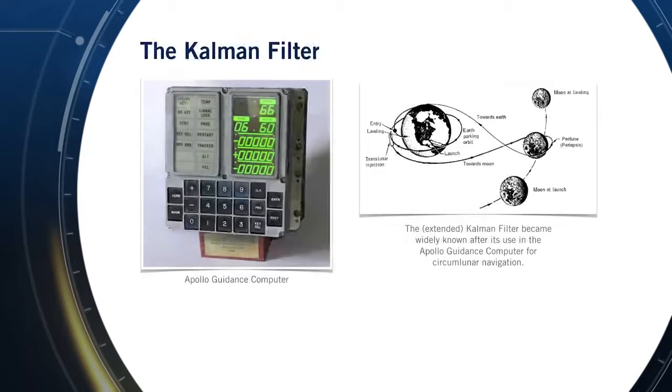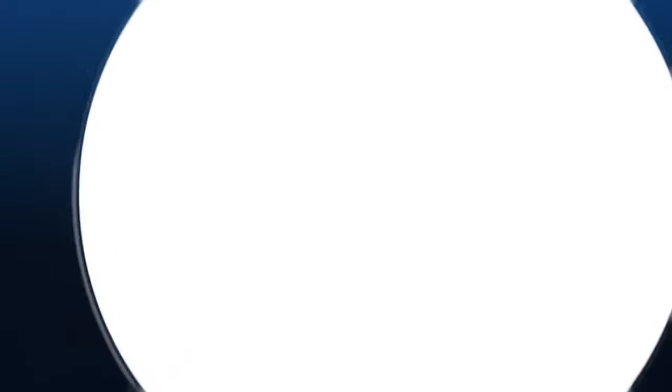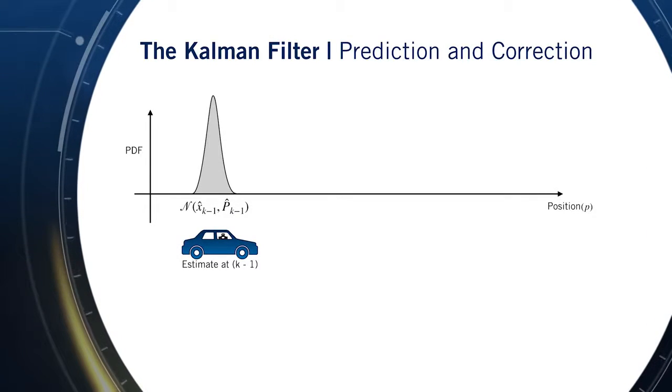The filter helped guide the Apollo spacecraft accurately through its circumlunar orbit. The engineers at NASA Ames Research Center adopted Kalman's linear theory and extended it to nonlinear models. We'll look at this specific extension in an upcoming module, but first, let's talk about the basic linear Kalman Filter.